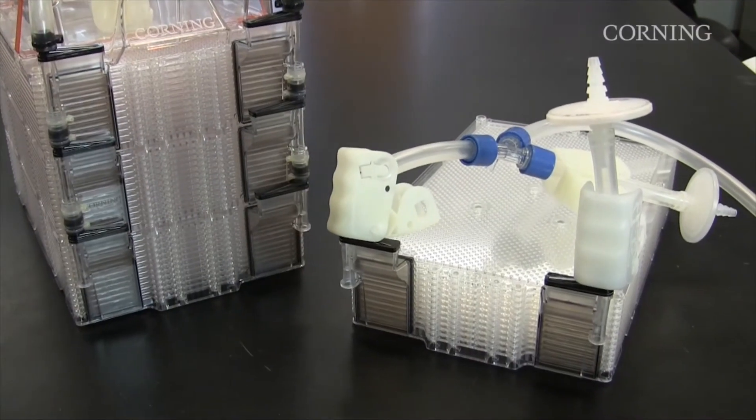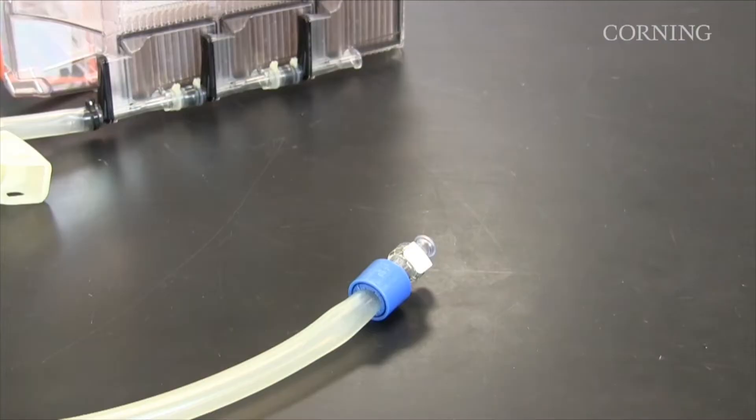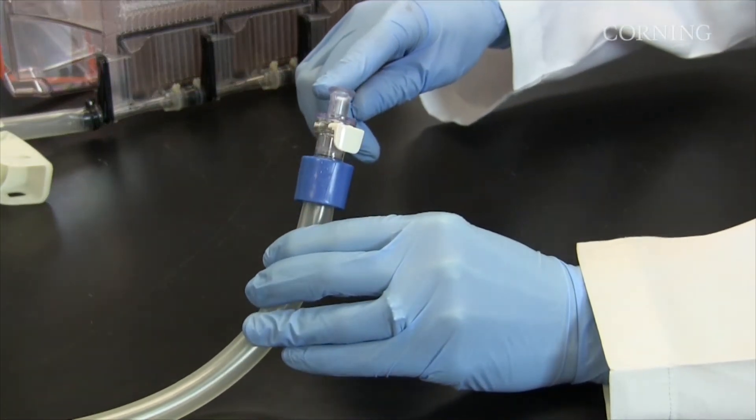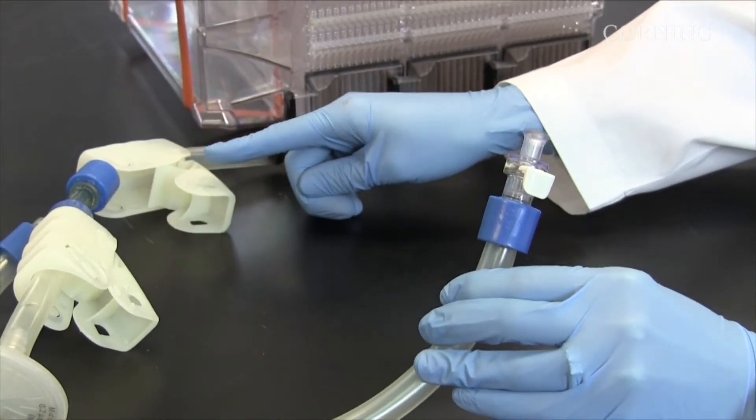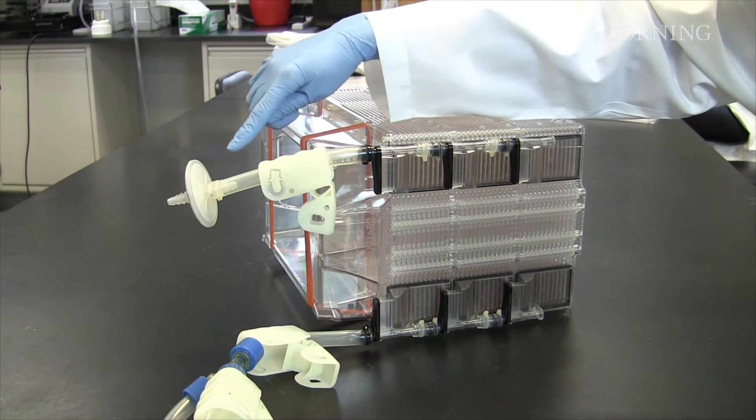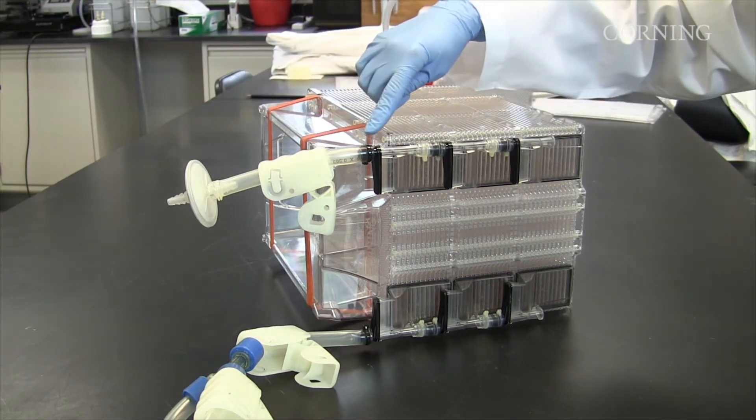The liquid handling tubing is used to make all closed system fluid manipulations. One end has an MPC quick connect for aseptic connections. The other end connects to the liquid manifold. The vent tubing connects the vent filter to the air manifold. It controls airflow and maintains sterility.